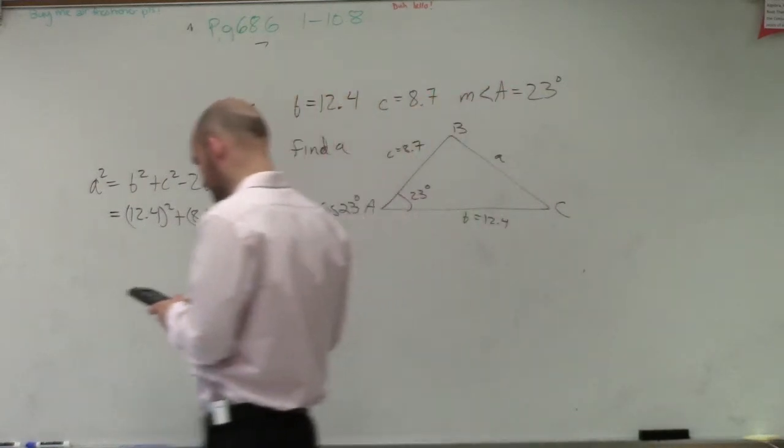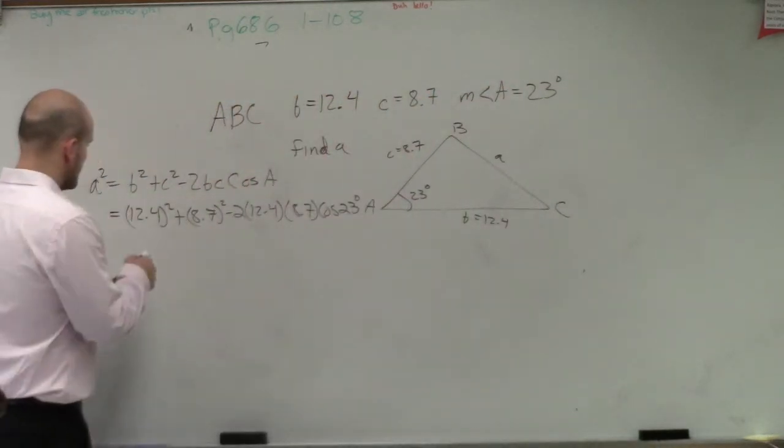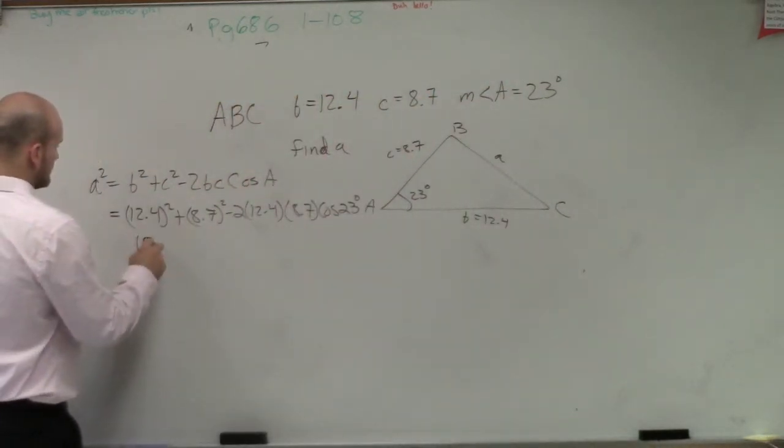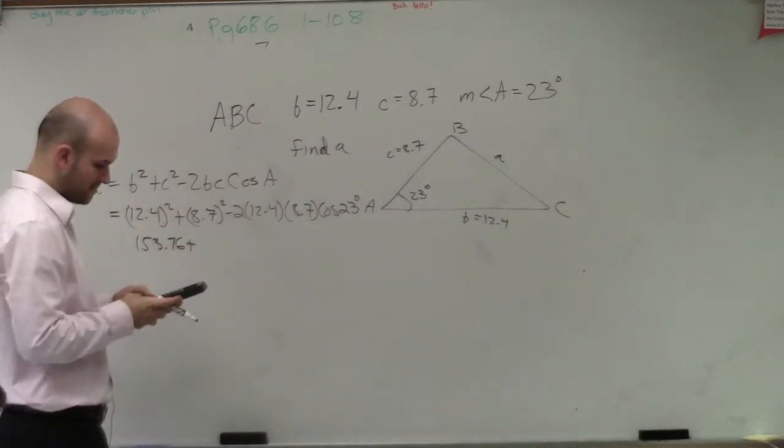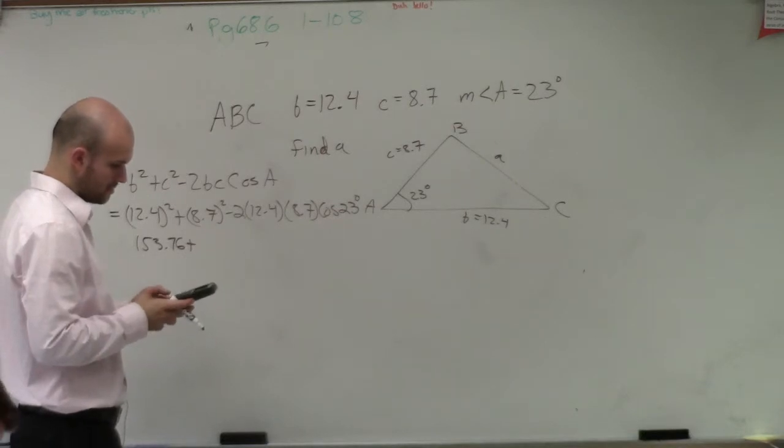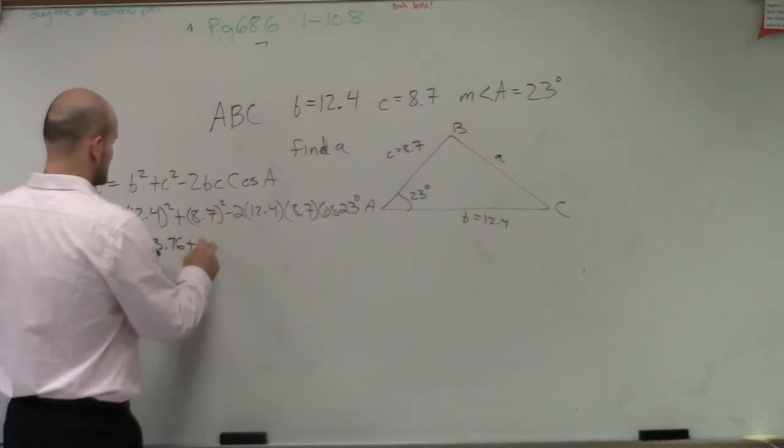So I do 12.4 squared equals 153.76 plus 8.7 squared equals 75.69.